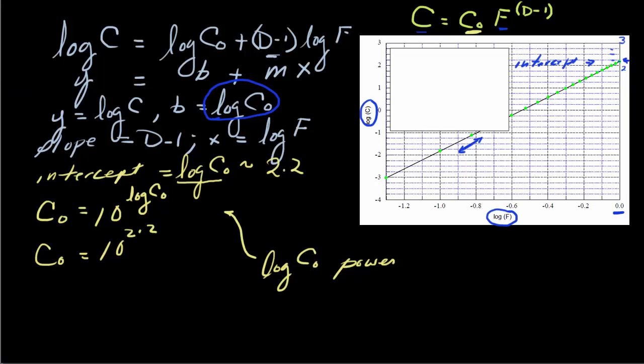So we now have our C zero. We also know what the intercept is. We can read the intercept directly off the graph. The intercept in this case, you're used to seeing it on the left side, so that may throw you off, but it's basically at a point on the log C axis, or log F axis, where log of F is equal to zero.